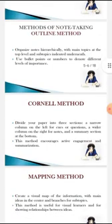There are four methods of note-taking. The first one is the outline method. It organizes notes hierarchically with main topics at the top level and subtopics indented underneath. Use bullet points or numbers to denote the different levels of importance.